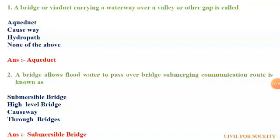The second question: the bridge that allows fluid water to pass over the bridge, submerging the communication route, is known as. The first option is submersible bridge, second is high level bridge, third is causeway, and fourth is through bridge. The answer is submersible bridge.